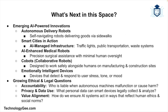We're only scratching the surface of what AI-powered machines can do. Future developments include fully autonomous delivery robots roaming sidewalks, smart cities where traffic lights adjust to real-time traffic flows, AI-enhanced medical robots performing precise surgeries with minimal supervision, collaborative robots working side-by-side with humans on job sites, and emotionally aware smart devices that respond to your mood or stress levels.